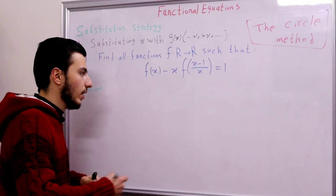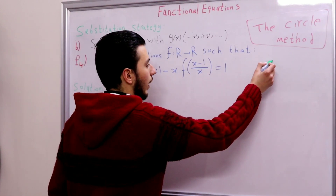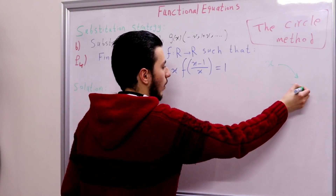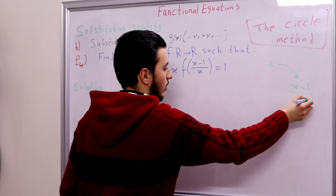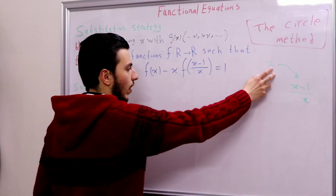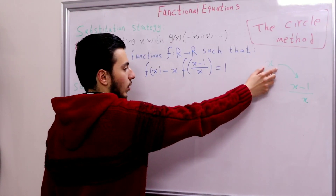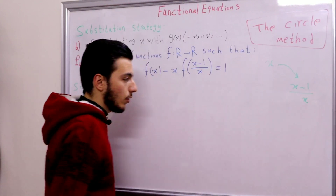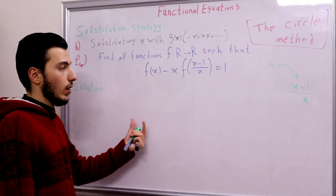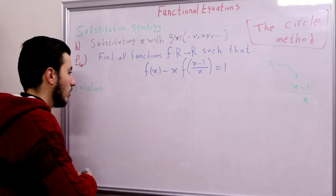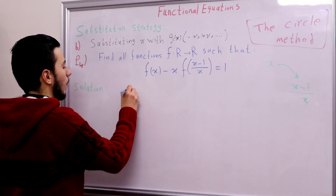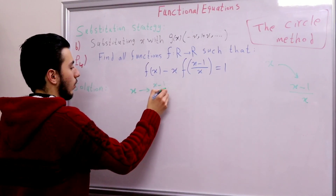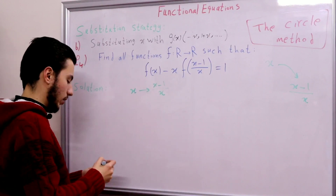We can say that x is linked to x minus 1 over x. So in order to find f(x) we need to evaluate f(x minus 1 over x). Simply, let's substitute x with x minus 1 over x. The first substitution is substituting x with x minus 1 over x.